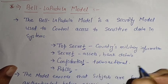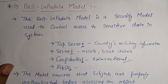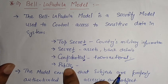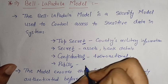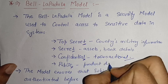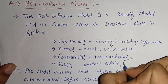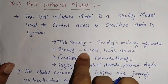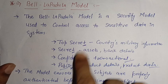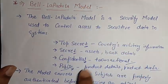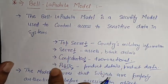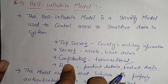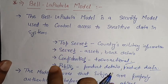The third type is confidential data — this includes transactions done with other companies or with clients. The fourth type is public data, which can be viewed by everyone, such as product details and product prices. The Bell-LaPadula model has the duty to secure all four types: top secret, secret, confidential, and public data.